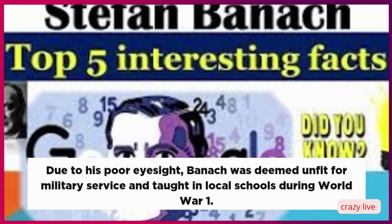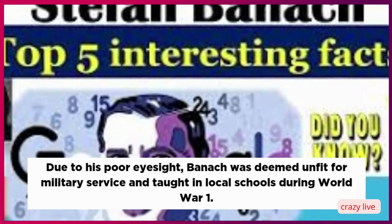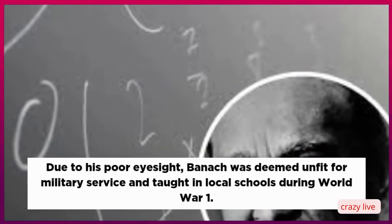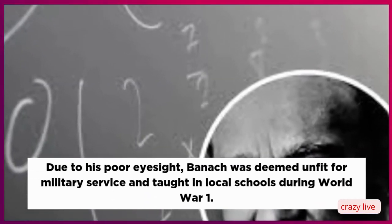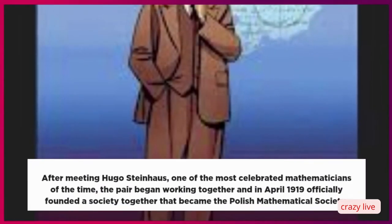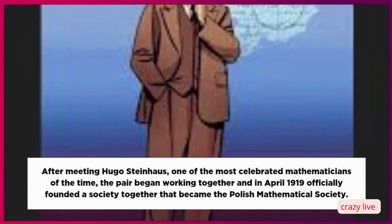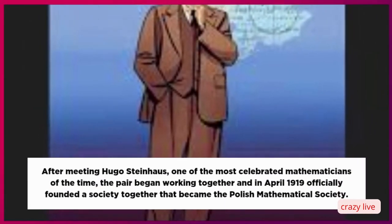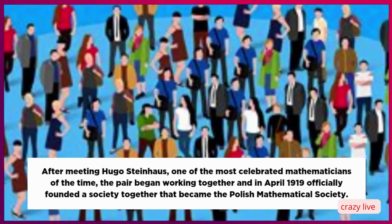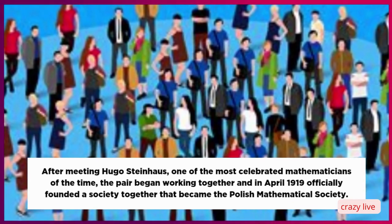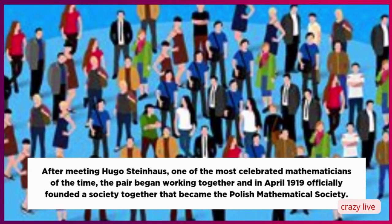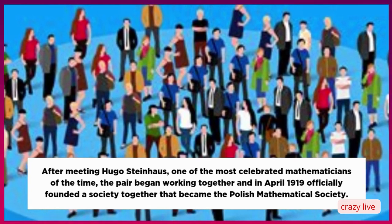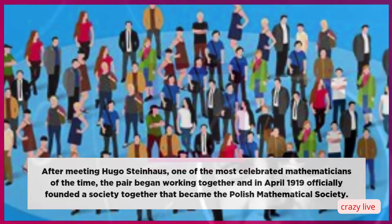Due to his poor eyesight, Banach was deemed unfit for military service and taught in local schools during World War I. After meeting Hugo Steinhaus, one of the most celebrated mathematicians of the time, the pair began working together and in April 1919 officially founded a society that became the Polish Mathematical Society.